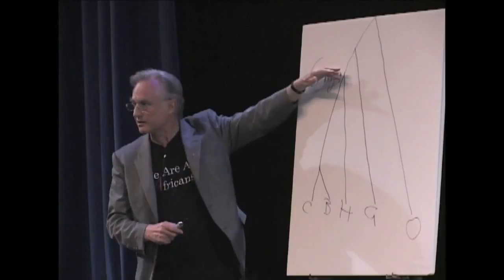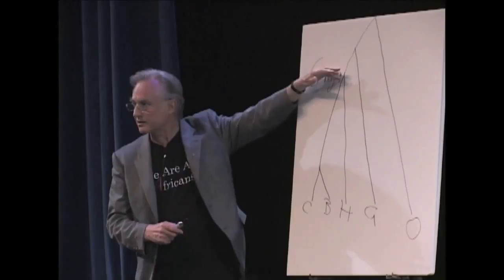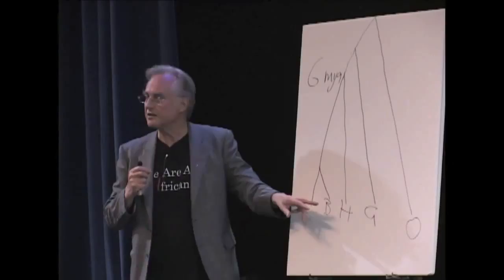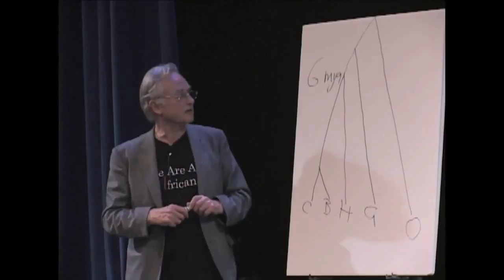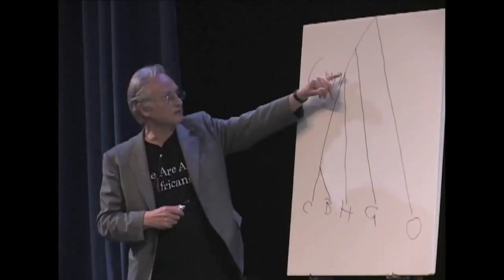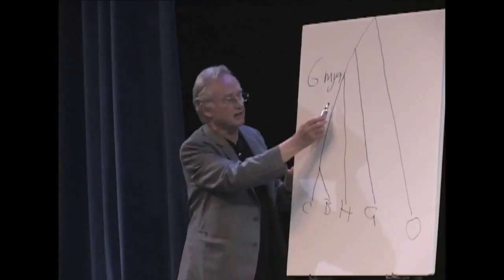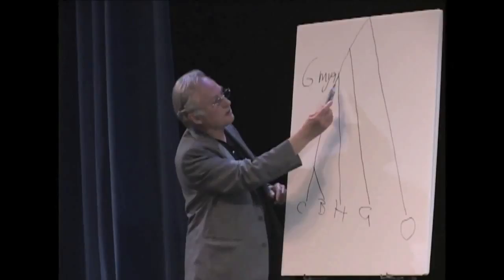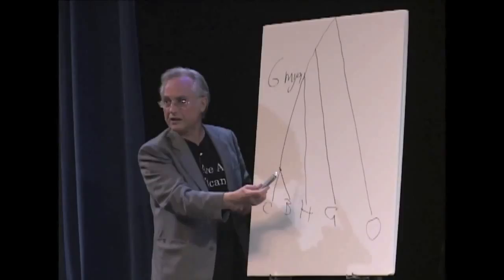The reason we know approximately the date of the common ancestor is molecular evidence comparing the genes and proteins of these various animals. It's possible to calibrate the date at which a common ancestor happened. We can date the common ancestor of humans, chimpanzees, and bonobos at about six million years ago. Unfortunately, there are no fossils down this line here, possibly because they're forest-dwelling animals. Nowadays, unlike in Darwin's time, there are quite a lot of fossils down this line here. They're all in Africa.